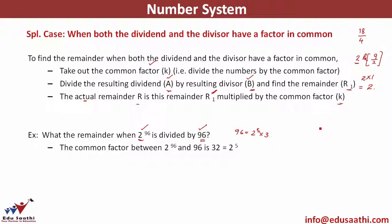The numerator is 2^96 and the denominator is 2^5 × 3. This is what we have, and we need to find the remainder.